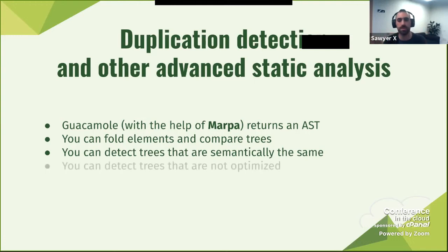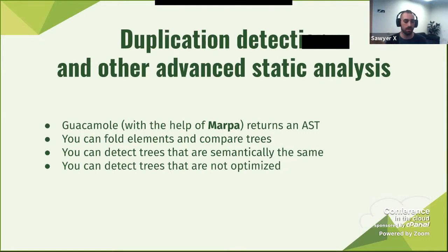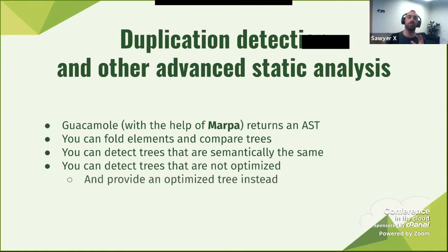You can detect trees that, while they are different trees, semantically are actually the same idea — they do the same thing. You can also detect trees that are not optimized, and then rewrite them using a different, optimized tree.